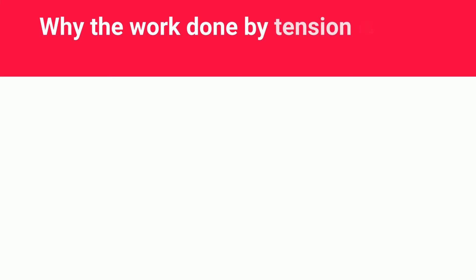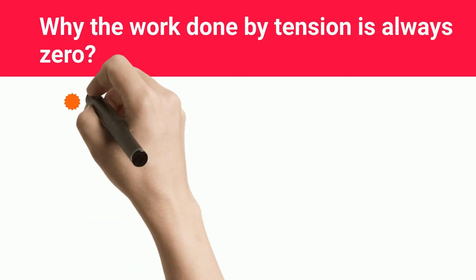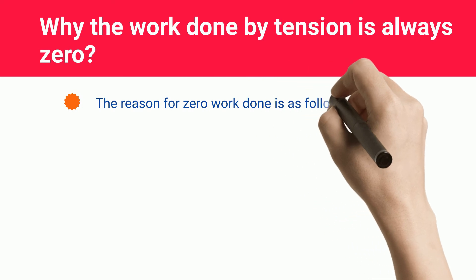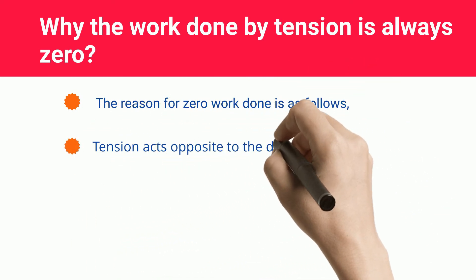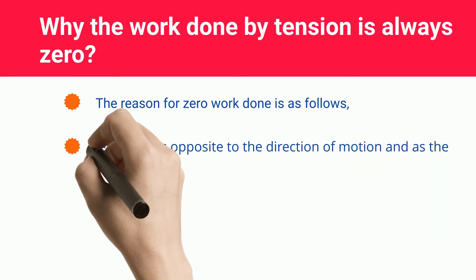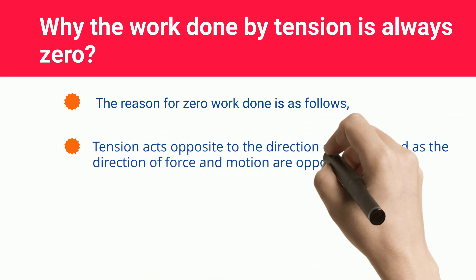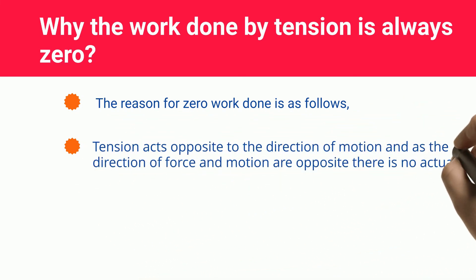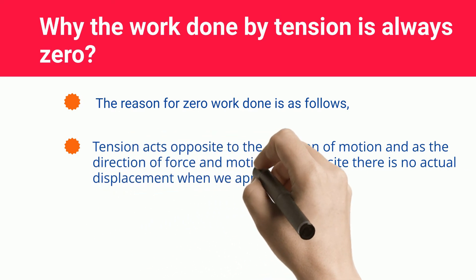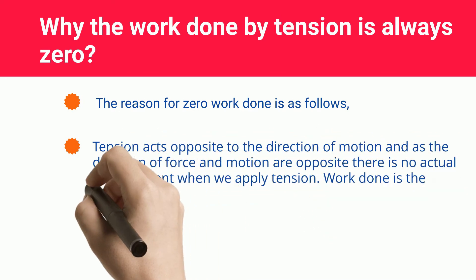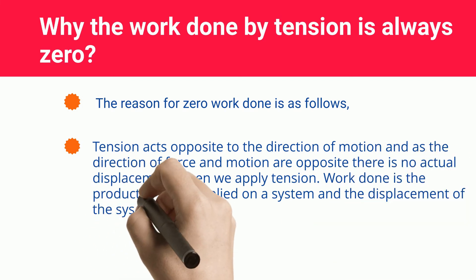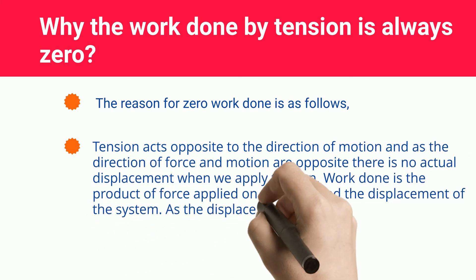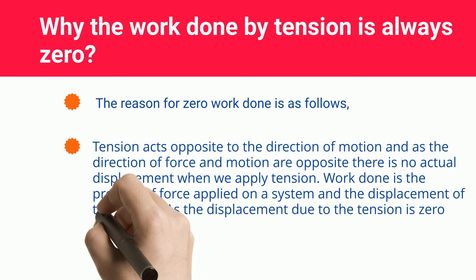Why is the work done by tension always zero? Tension acts opposite to the direction of motion, and as the direction of force and motion are opposite, there is no actual displacement when tension is applied. Work done is the product of force and displacement, so since the displacement due to tension is zero, the work done by tension is also zero.